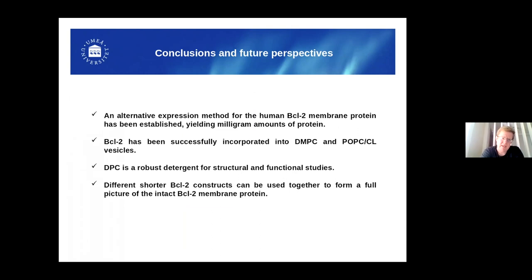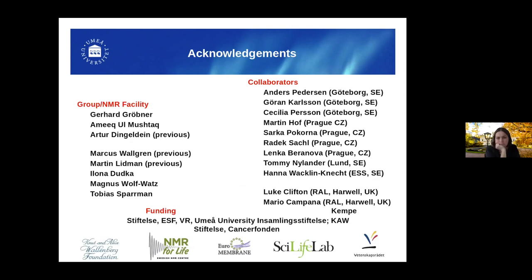To summarize: most importantly, we have found an expression method that works with BCL2 as a membrane protein, and we can now yield milligram amounts of protein. We have incorporated BCL2 into DMPC and other lipid systems, we found DPC is the best detergent candidate for NMR giving a very nice spectrum, and we can use shorter BCL2 constructs together to form the full picture of how the BCL2 protein looks in NMR.